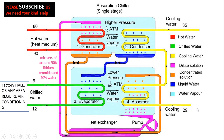In an absorption chiller, vapors are generated and absorbed due to pressure differences — that is why it is called an absorption chiller. The refrigerant used is a lithium bromide and water solution, typically in a 50/50 or 60/40 ratio. Some absorption chillers use ammonia and water, but in this video we are explaining the lithium bromide and water type.